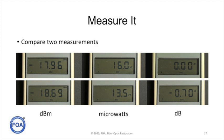Here's our old meter again that measures in microwatts and dBm, and has a 0 dB reference scale. So across the top, we're looking at 16 microwatts, or minus 17.96 dBm, and we set the 0 dB at that point. On the bottom, we've reduced the power to 18.69 dB, or 13.5 microwatts, and that shows the power is lower by minus 0.70 dB. So we've seen a loss from the top to the bottom of 7 tenths of a dB.